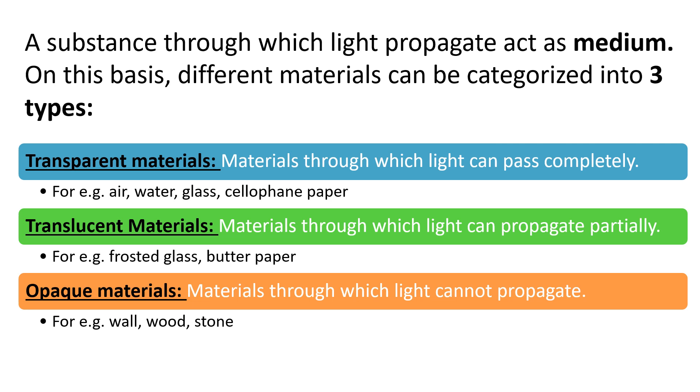Third is the opaque material through which light cannot propagate. For example, walls, wood or stone. And these opaque materials, when they come in contact with the light, they cast shadows.